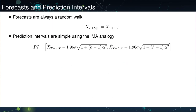The nice thing about exponentially weighted moving averages, or SES, is that the forecast for any horizon depends only on the one-step-ahead forecast. So if I want to forecast eight steps ahead, all I need to do is have the one-step-ahead forecast — they'll be the same value. As soon as I have one, I have forecasts for all horizons.